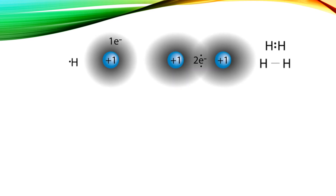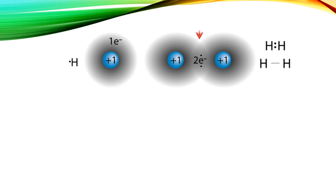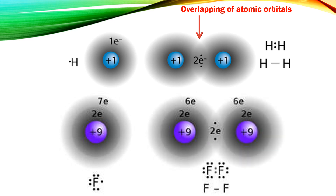Covalent bonds are formed by the overlapping of atomic orbitals to form molecular orbitals. As a result of the overlap of the two orbitals, the electrons become paired and produce a region of high electron charge density. A covalent bond is formed.